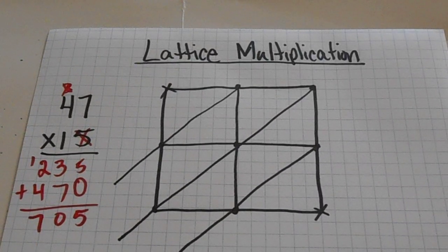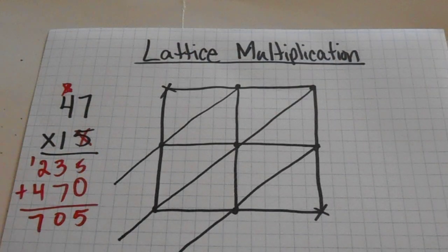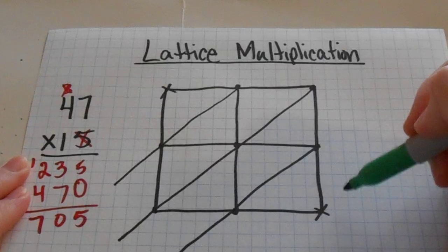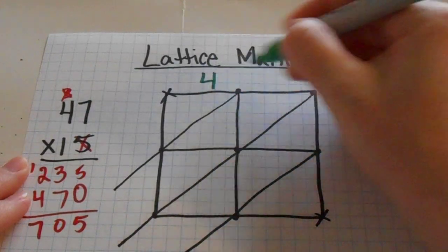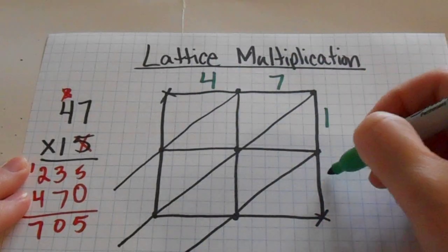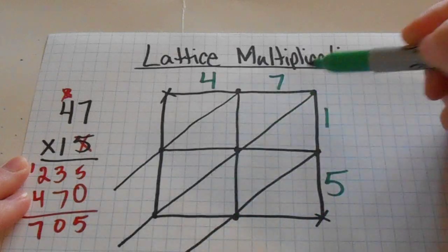Now I need my numbers. My numbers for my problem are going to go right across the top and down the side. It does not matter which number goes on the top and which number goes on the side. What does matter is the placement of these numbers.